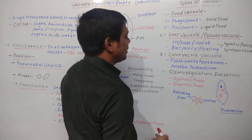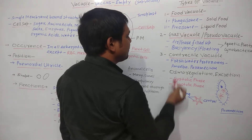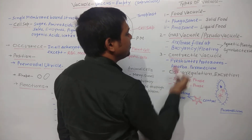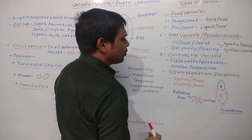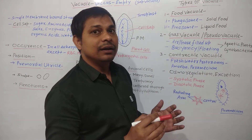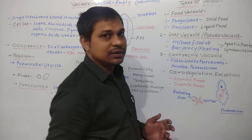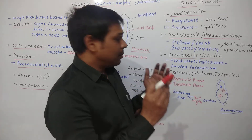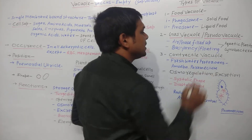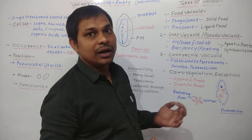Next are contractile vacuoles, which are generally present in fresh water protozoans like amoeba and paramecium. Contractile vacuoles perform the function of osmoregulation — that means maintaining the amount of water and electrolytes in the cell — and also excretion, meaning the removal of excretory matter such as nitrogenous waste like ammonia, urea, and uric acid.